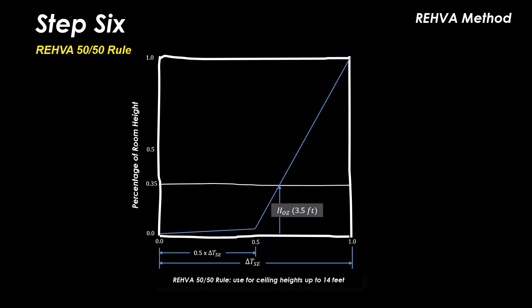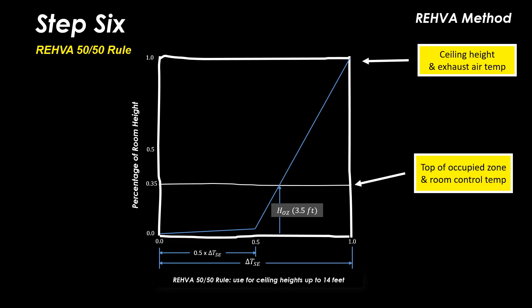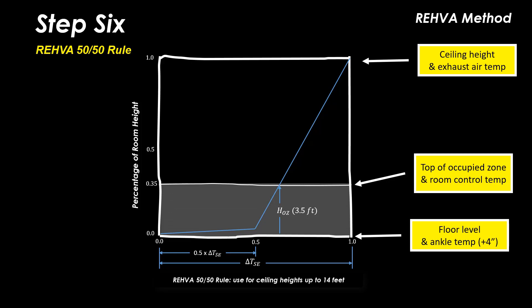The REHVA 50-50 rule can be explained by examining the temperature gradient in the space relative to the total space height. At the top is the ceiling height at which the exhaust or return inlet is located. With a 3.5 foot high occupied zone, the top of the occupied zone is 35% of the total height. At the base is the floor level where the supply air outlet is located. The occupied zone is shaded grey in this graphic.